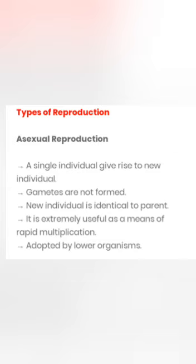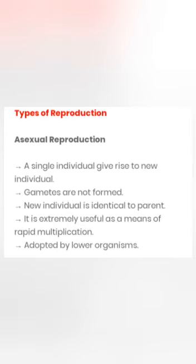Asexual reproduction. In this type of reproduction, a single individual gives rise to a new individual. That means a single parent is involved. Gametes are not produced, unlike sexual reproduction where male and female gametes are produced. The new individual produced is identical to the parent. This type of reproduction is extremely useful as a means of rapid multiplication and is seen in lower organisms.